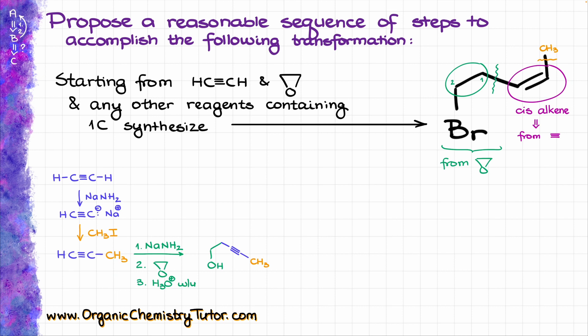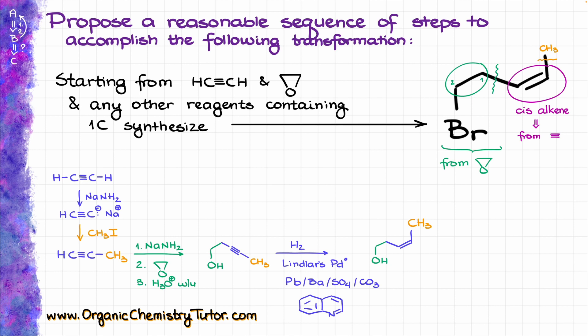To finish up the synthesis, I need to replace my OH group with bromine and convert the triple bond into a double bond. Let's deal with the triple bond first by treating it with hydrogen on Lindlar's palladium. Lindlar's palladium is palladium that has been poisoned by lead or barium sulfate or carbonate, typically suspended on calcium carbonate, and some quinoline for good measure, which is going to give us the cis double bond.